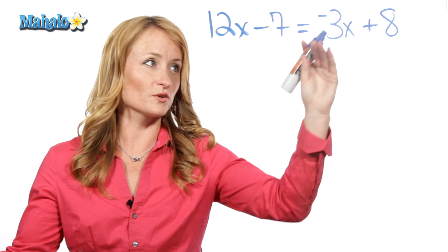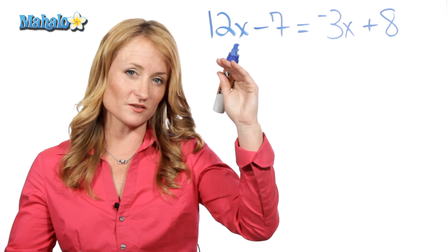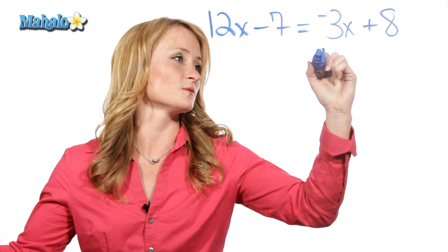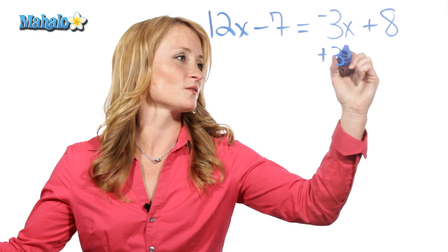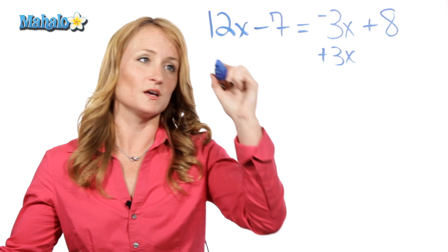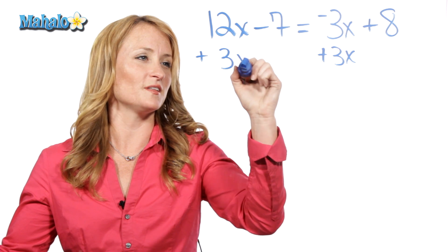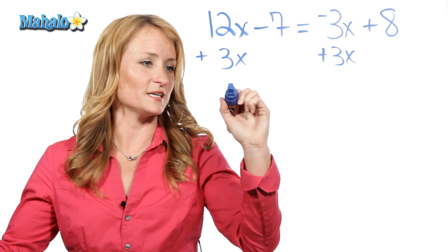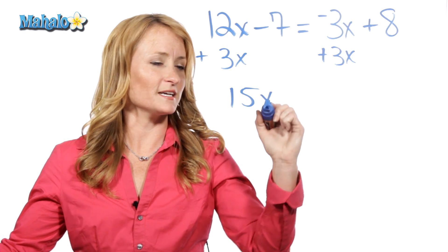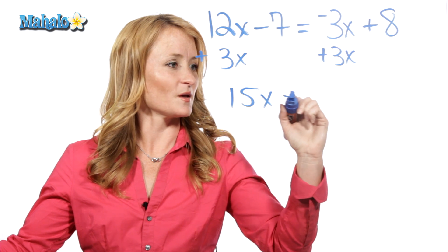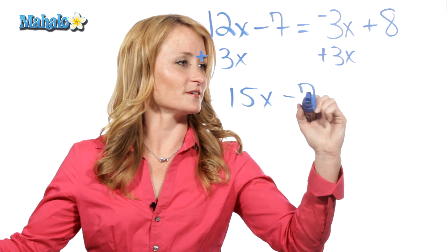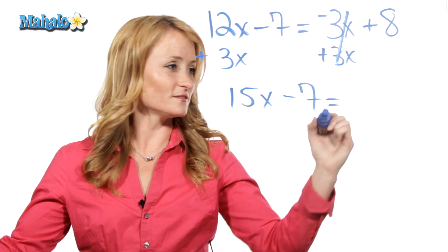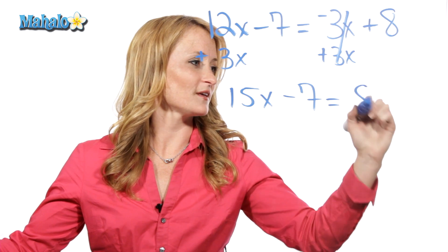Now, it's negative 3x, so in order to move them to the other side, we have to do the opposite, which means we're going to add 3x. What you do to one side, you have to do to the other. So, 12 plus 3 is 15x minus 7 equals — this canceled this out, so we're left with 8.